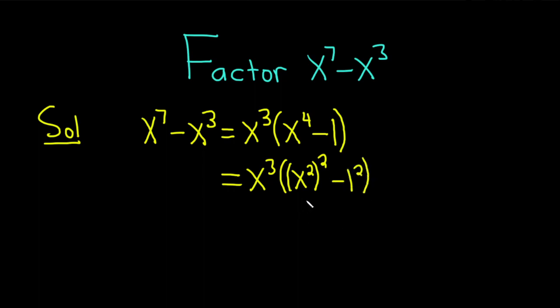And let me just refresh your memory on the formula we're going to use next. The difference of squares formula says if you have a squared minus b squared, that's equal to parenthesis a minus b times a plus b.